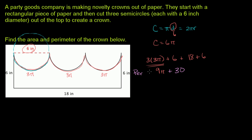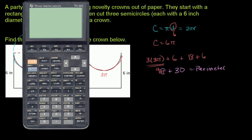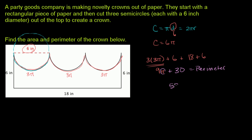So the perimeter is 9 pi plus 30. If we wanted the exact decimal, we could substitute 3.14 for a rough approximation of pi, or use a calculator. Even a calculator doesn't have infinite precision for pi. Using the calculator: 9 times pi plus 30 gives us approximately 58.27 inches. So the perimeter is equal to 58.27 inches.